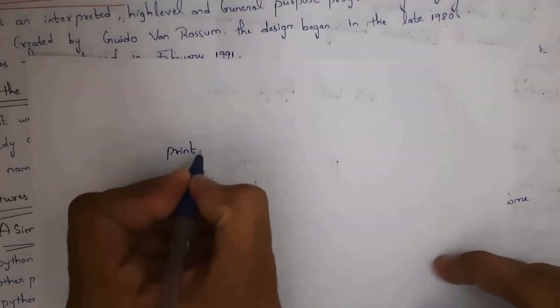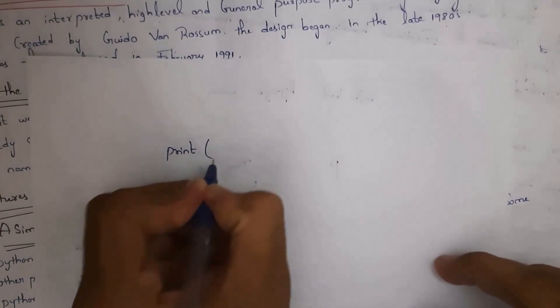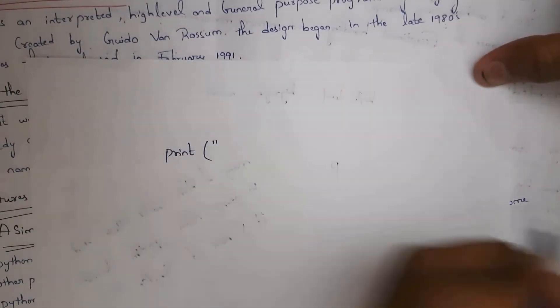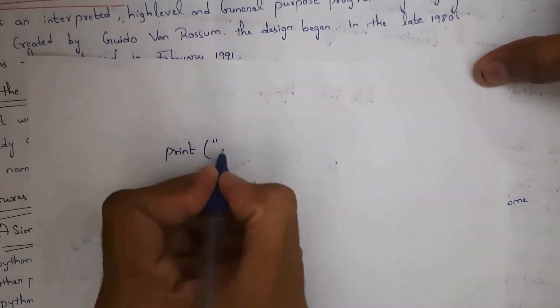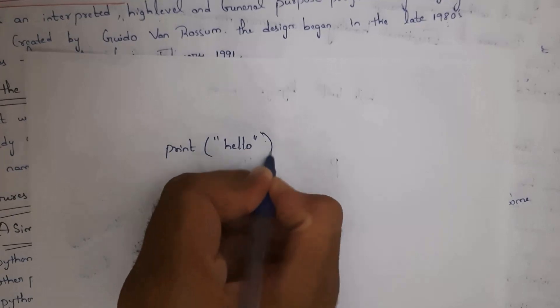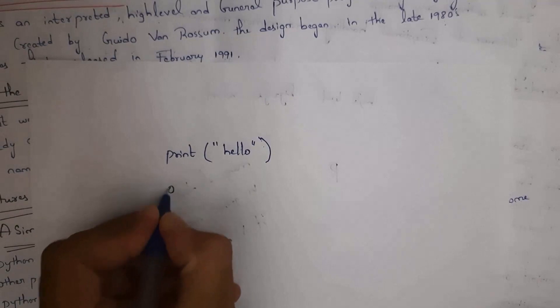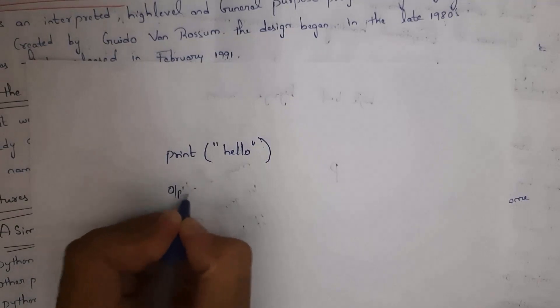In Python we use print instead of printf. The print function is used to generate output. You write print, open bracket, double quotation marks, 'Hello', close bracket — no semicolon needed. Whenever you execute this program you will get the output 'Hello'. So Python is a very simple programming language compared to all others.